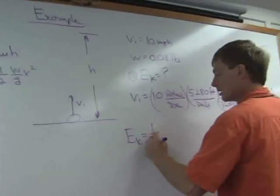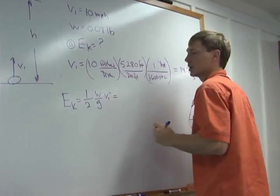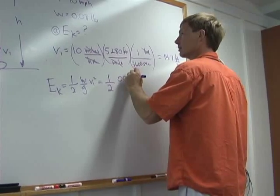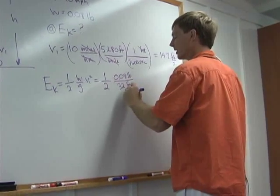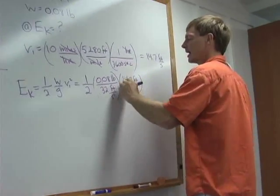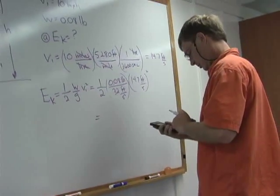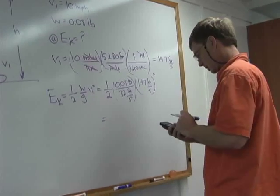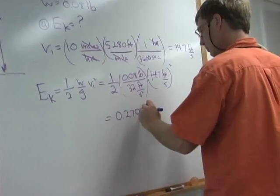That gives us 14.7 feet per second. The kinetic energy as it leaves the ground is one-half weight divided by gravity times velocity squared — that's one-half times 0.08 pounds over 32 feet per second squared, times 14.7 feet per second squared. And that gives 0.270.